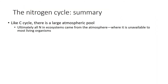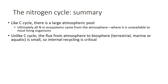A quick summary of the nitrogen cycle: like the carbon cycle, there is a large atmospheric pool of nitrogen, and ultimately all nitrogen in ecosystems has come from this atmospheric pool where it is unavailable to most living organisms. But unlike the carbon cycle, the flux from the atmosphere to the biosphere — whether terrestrial, marine, or aquatic — is very small. Because of that, internal recycling of nitrogen within ecosystems is critical for supplying the nitrogen that autotrophs need.